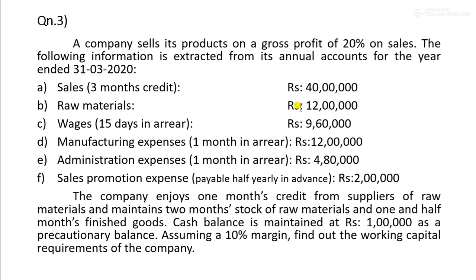Raw materials: 12,00,000. Wages with 15 days outstanding: 9,60,000. Manufacturing expenses with one month outstanding: 12,000. Outstanding manufacturing expenses are a current liability.